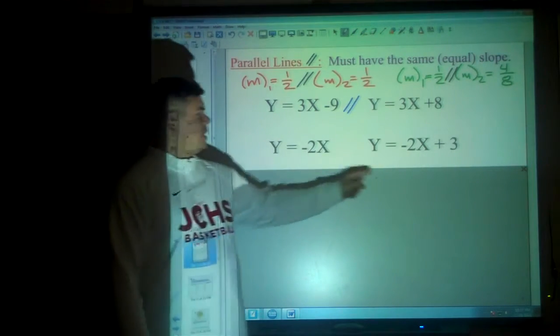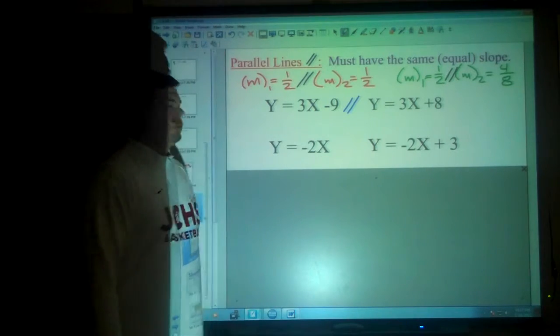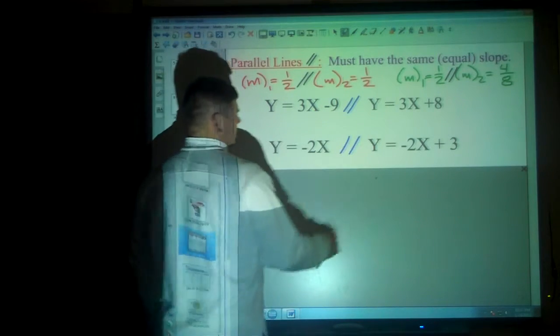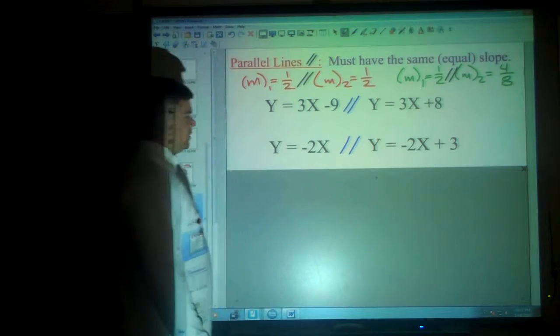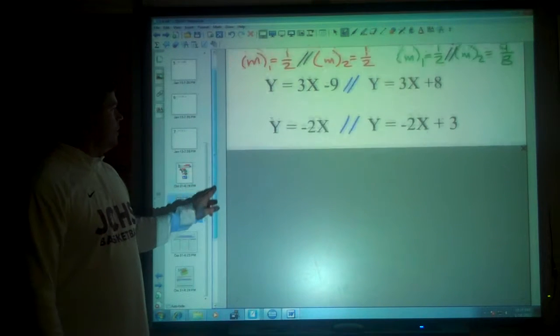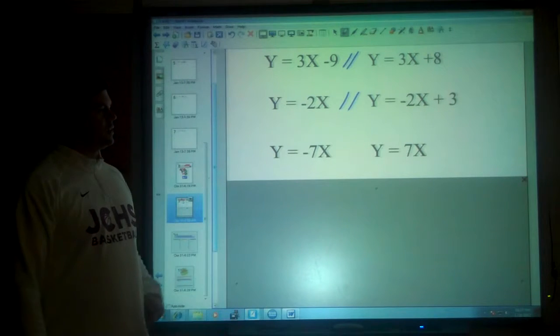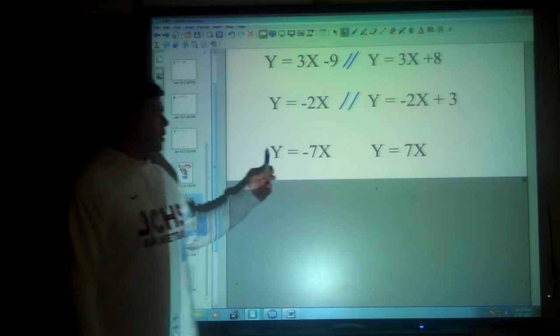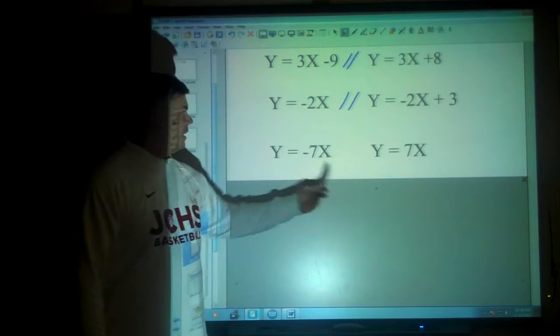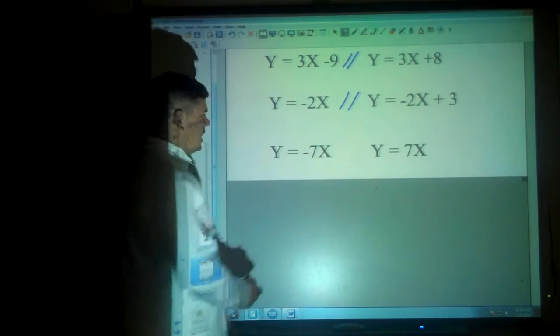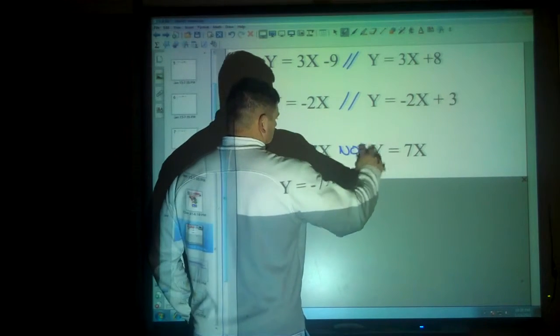Negative 2x, negative 2x plus 3. Those are both parallel because they have the exact same slope. It doesn't matter what the y-intercept is. What matters is the slopes. Negative 7x and positive 7x. These would not be parallel. Negative and positive are not the same, so these are not parallel.